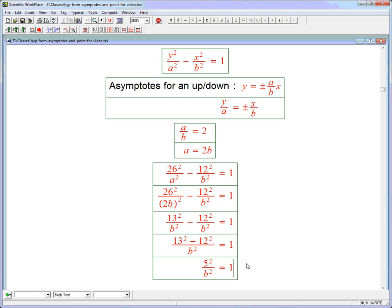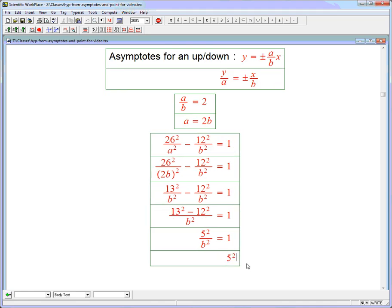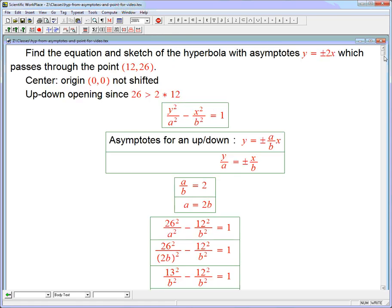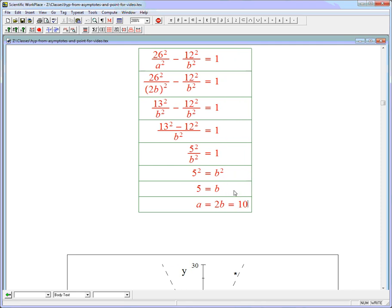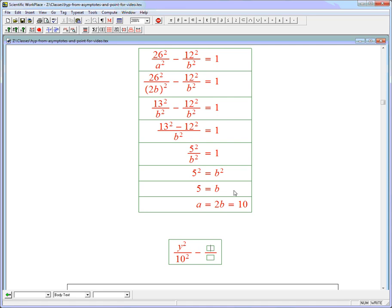Aha. Or in other words, 5 squared equals b squared or 5 equals b. Remember, b and a, by definition, are just positive because they always really come in as their squares because the only place, the fundamental place they come in is up here. And we just always use the positive version. And so we're just going to say 5 equals b. And then a, remember, was 2b. So that's going to be 10. And so our equation, y squared over 10 squared minus x squared over 5 squared equals 1. So there we've got our equation.